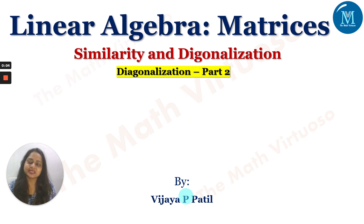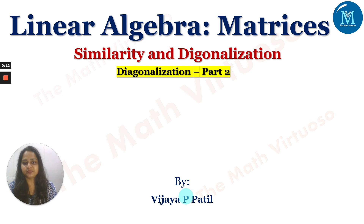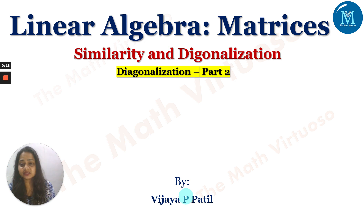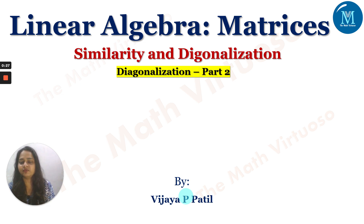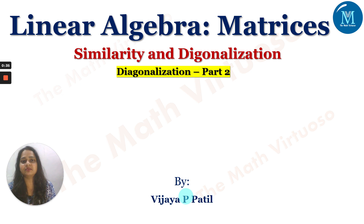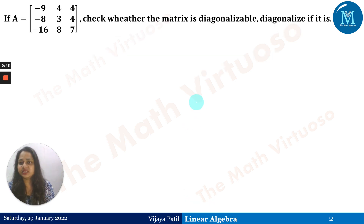Hello and Namaste. In continuation with the linear algebra topic on matrices, we have started with similarity and diagonalization. We completed Part 1 where we discussed eigenvalues that are distinct and how to diagonalize a given matrix. In Part 2, we will go ahead with different kinds of questions involving repeated eigenvalues — how to diagonalize, when the matrix can be diagonalized, and how to write matrix D and matrix M.